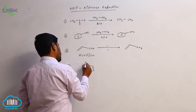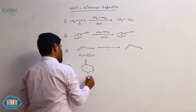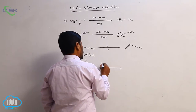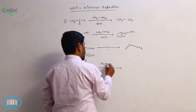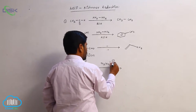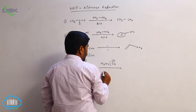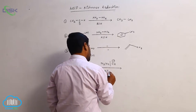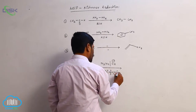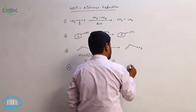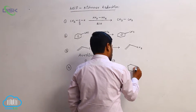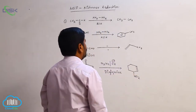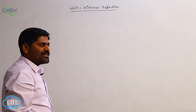Here we have a compound with a double bond, a carbonyl group, and a nitro group. Using N2H4 in a basic medium with diglyme as a solvent, the double bond is preserved as it is, the nitro group is also not disturbed, and only the carbonyl converts to CH2 — this is Wolff-Kishner reduction.